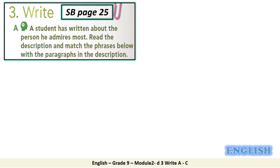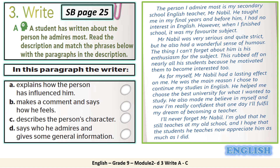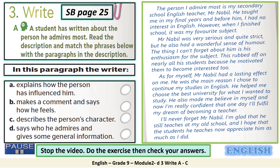Students' Book, page 25. A. A student has written about the person he admires most. Read the description and match the phrases below with the paragraphs in the description. In this paragraph, the writer: A. explains how the person has influenced him. B. makes a comment and says how he feels. C. describes the person's character. D. says who he admires and gives some general information. You can stop the video, do the exercise, then check your answers.